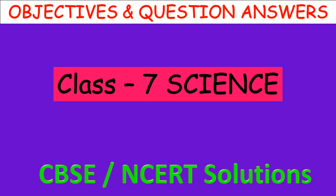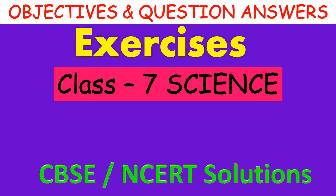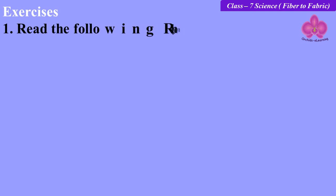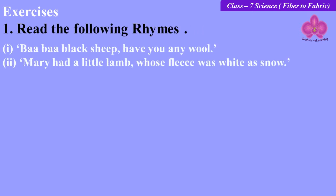Welcome to Orchid Z Learning. Today let us see the solution of exercises from the Class 7 Science lesson 'Fiber to Fabric'. We are all aware of the following rhymes: 'Baa Baa Black Sheep, have you any wool?' and 'Mary had a little lamb whose fleece was white as snow.' Based on the rhymes, answer the following: which parts of the black sheep have wool?